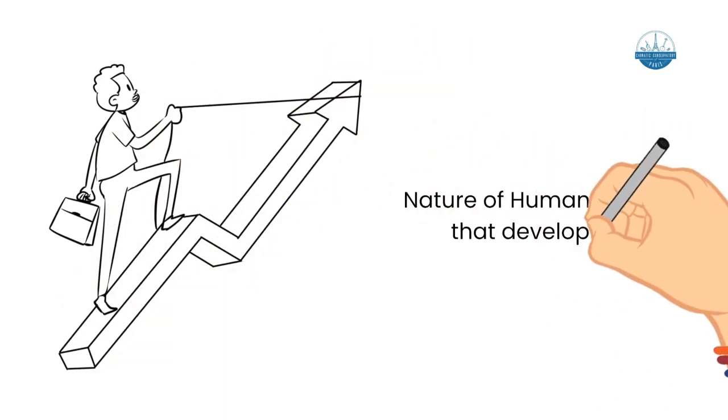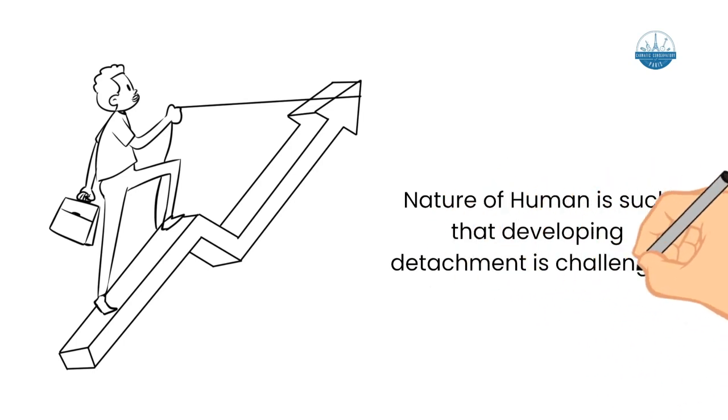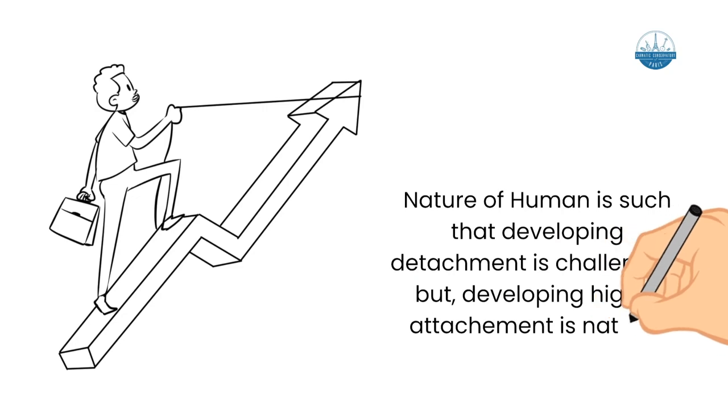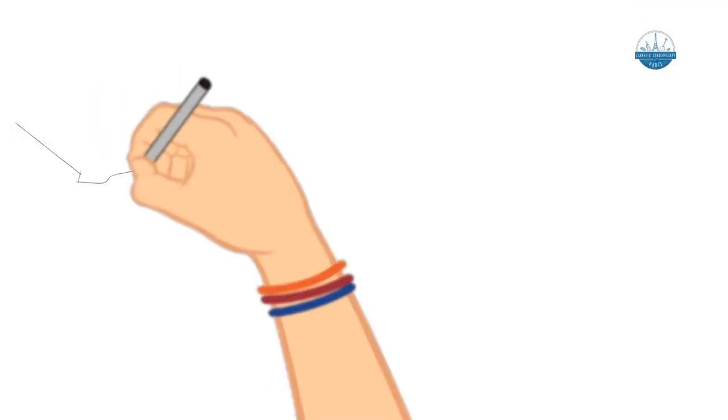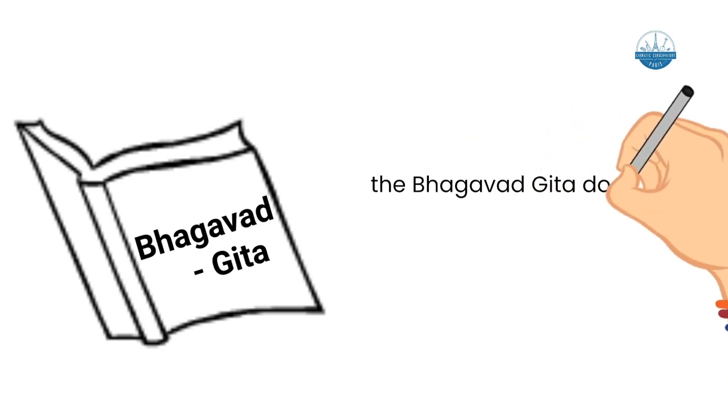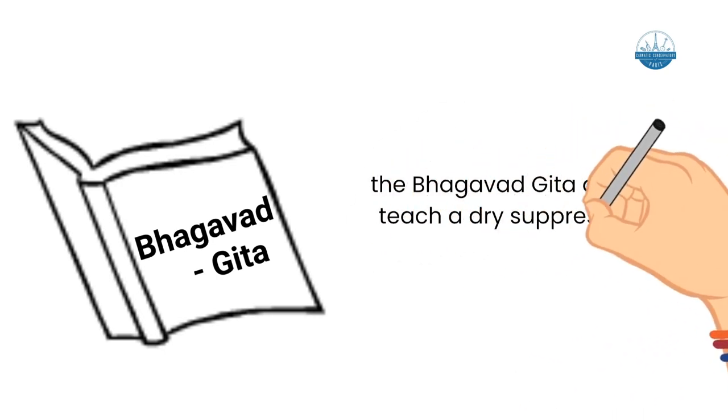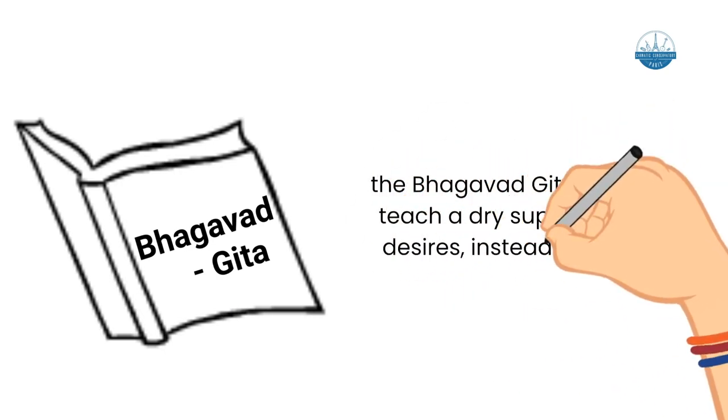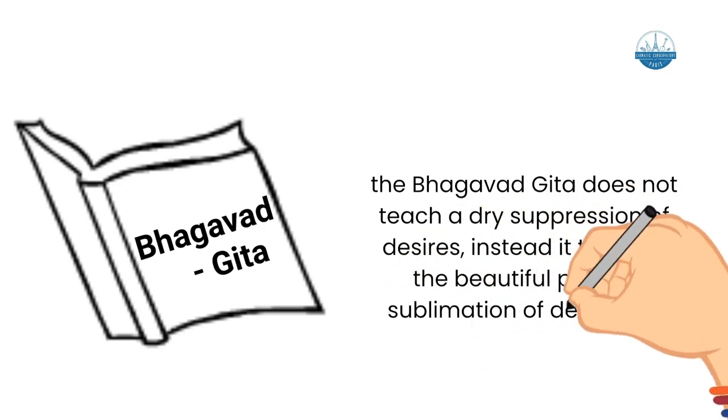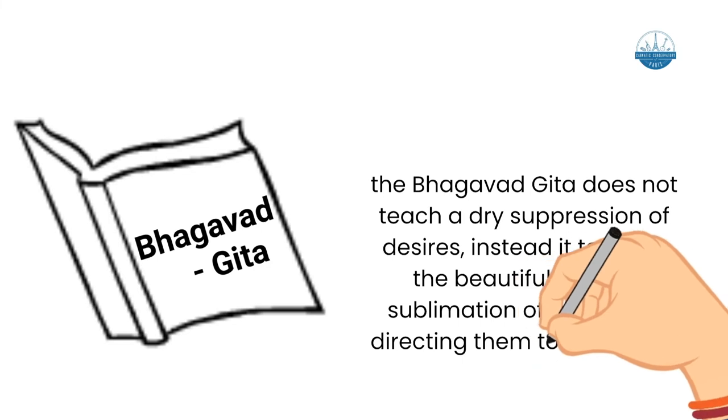Nature of human is such that developing attachment is challenging, but developing higher attachment is natural. The Bhagavad Gita does not teach a dry suppression of desires. Instead, it teaches the beautiful path of sublimation of desires by directing them towards God.